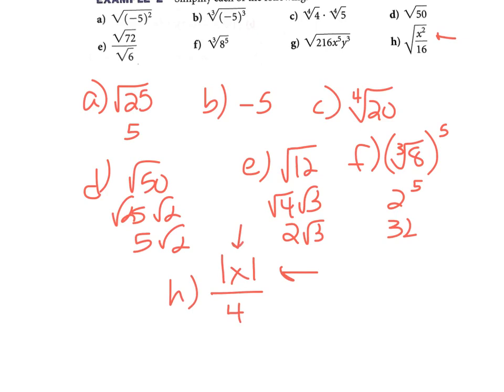So it goes: even root, even exponent inside, odd exponent outside — use absolute value. Even, even, odd — use absolute value.